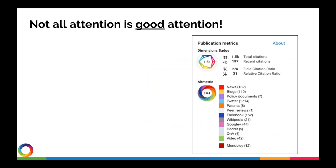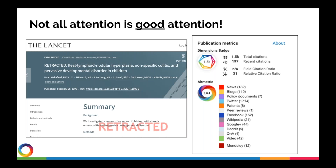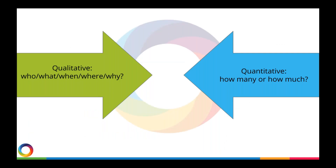Here's a more serious example of why you need to dig into the actual type of attention a paper receives. This paper has been cited over 1,500 times and has an Altmetric attention score of over 3,000 — featured in hundreds of news articles, blogs, policy documents, and patents. You might think it's a great paper, but this is actually the infamous Lancet paper linking vaccines to autism. We always want to ask: who is sharing the research, what are they sharing, when, where, and why — because quantitative numbers alone just answer 'how many.'